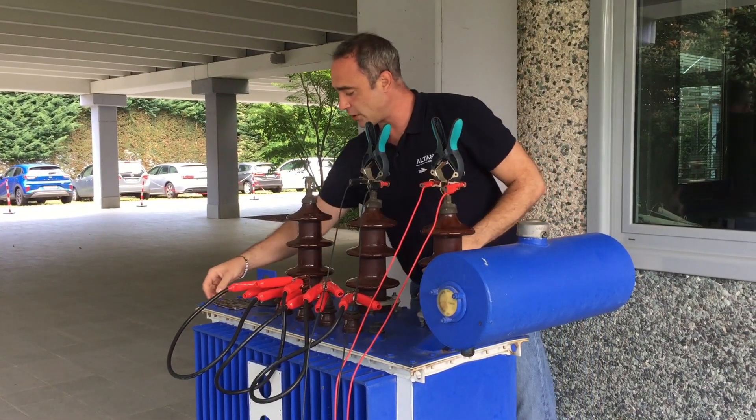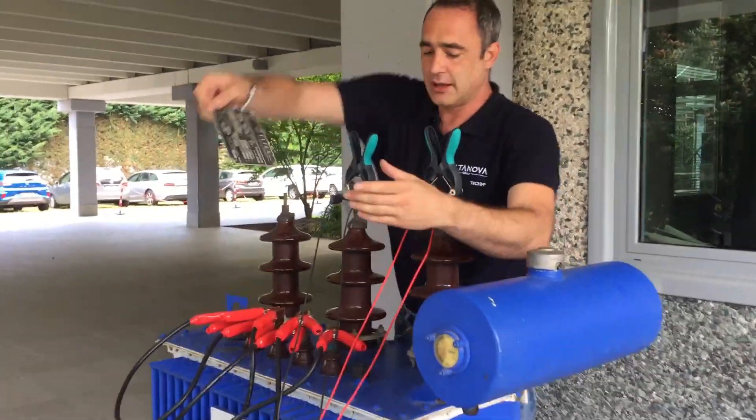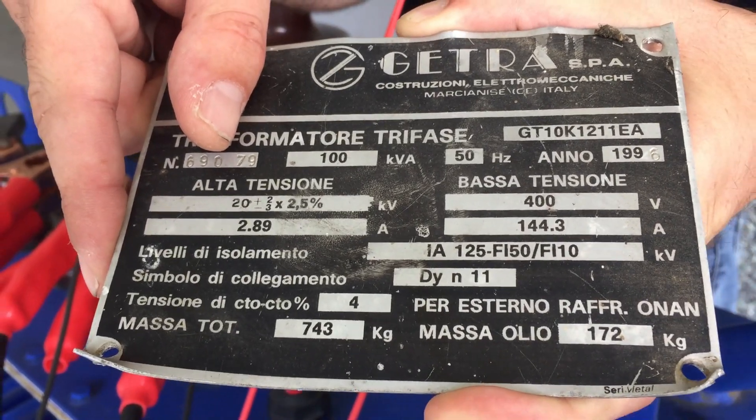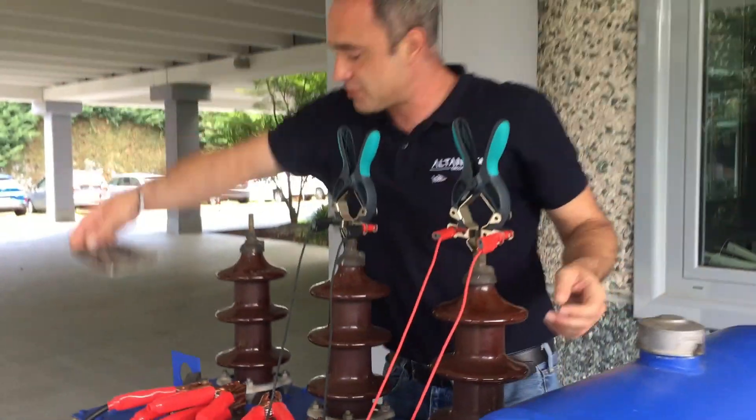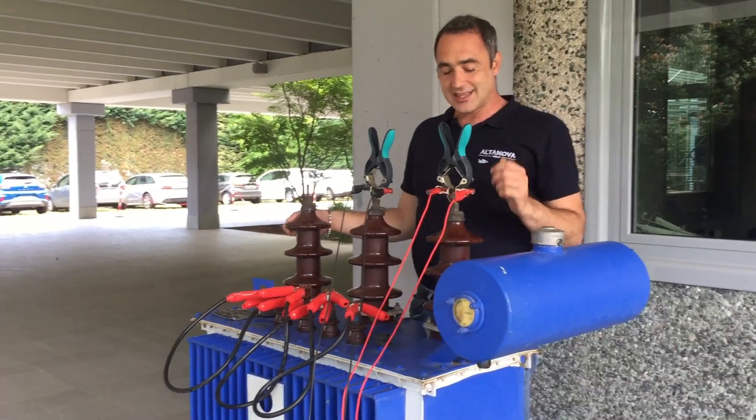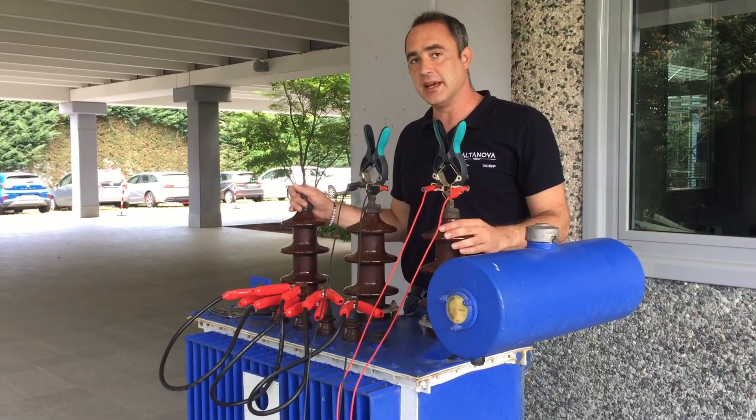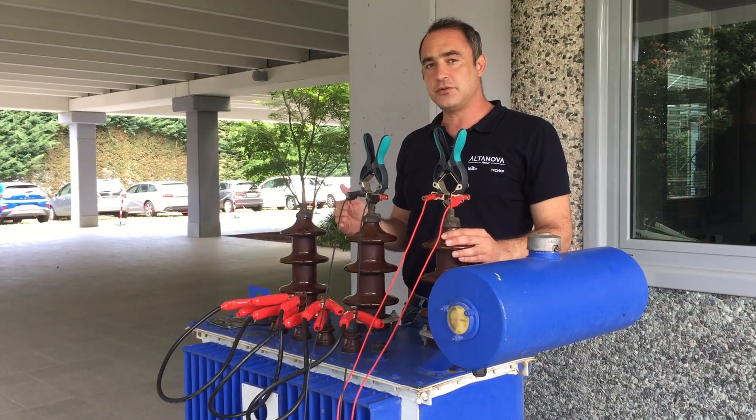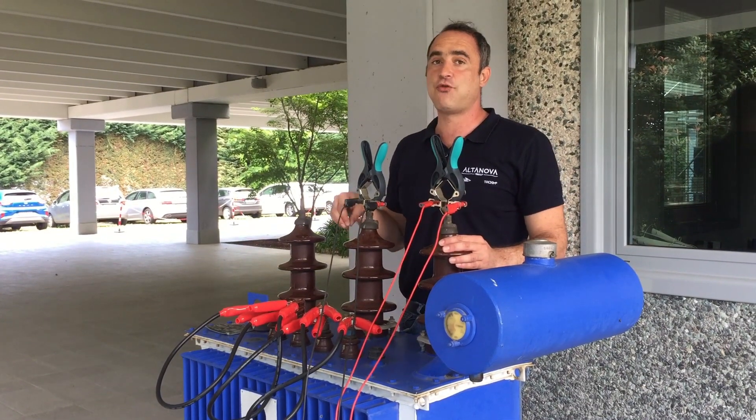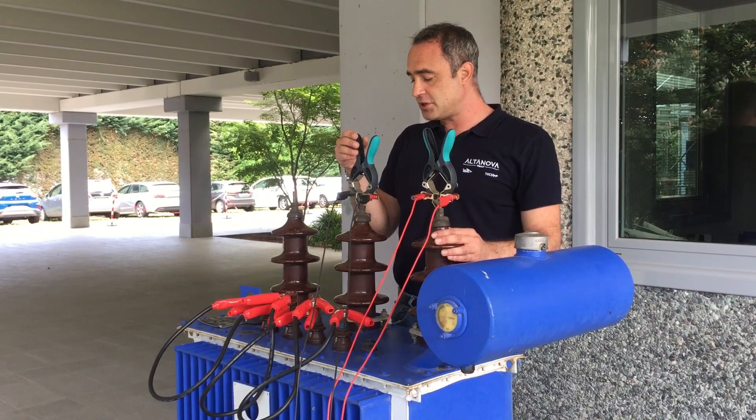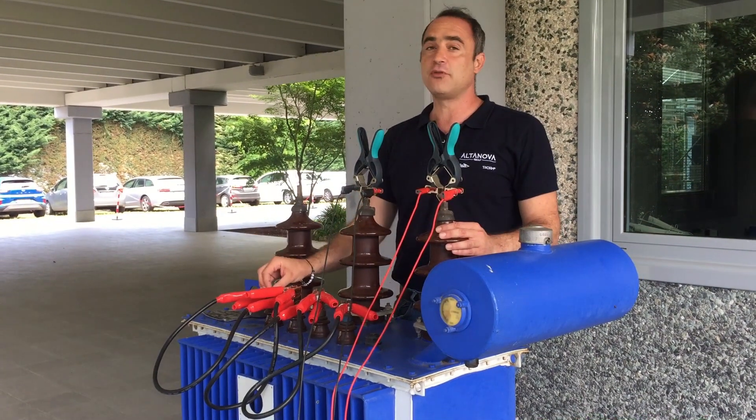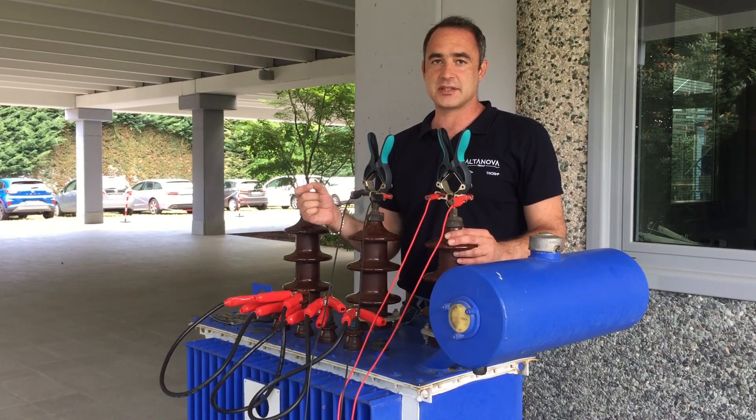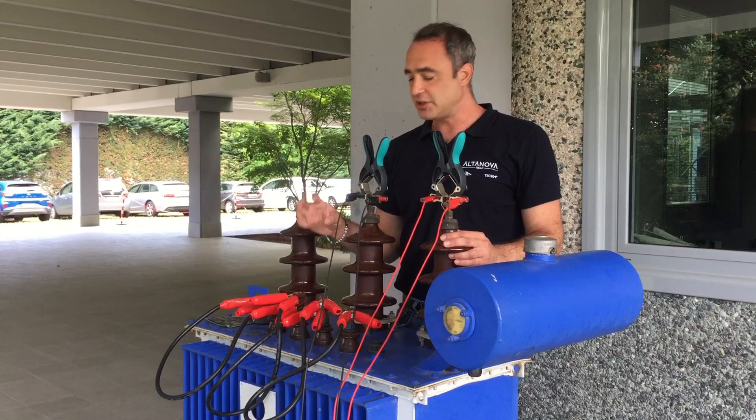Before we start the test, I want to show you that we have a nominal data here and it says 4%. So 4% is my nominal value for this transformer. What this means is that if this is a 20 kilovolt to 400 volt transformer, I actually need to generate not 100% but 104% of primary voltage to get the nominal voltage on the secondary side because 4% will be lost due to the copper resistance in the windings. So these are the losses.